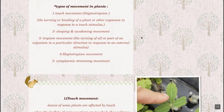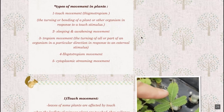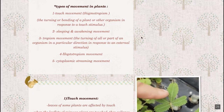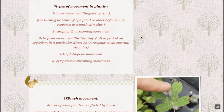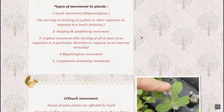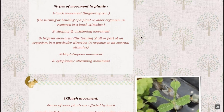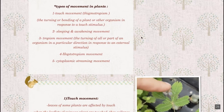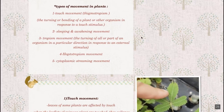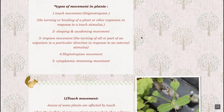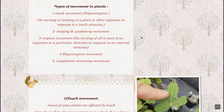Number two type of movement: sleeping and awakening movement. This means the closing and opening of the flower, for example, or of parts of the plant. Number three: tropism movement. Tropism means there is an external stimulus that affects the plant or a part of the plant.